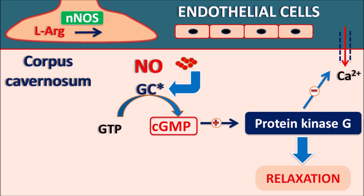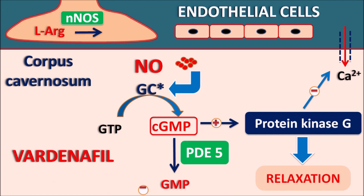The action of cyclic GMP is controlled by its metabolism. Within the smooth muscle, phosphodiesterase enzymes are present, and among them phosphodiesterase type 5 is most abundant. Cyclic GMP is converted into GMP by phosphodiesterase type 5. Vardenafil inhibits phosphodiesterase type 5, thereby increasing cyclic GMP levels within the corpus cavernosum, which causes relaxation of the corpus cavernosum and arterioles, leading to erection of the erectile tissue.